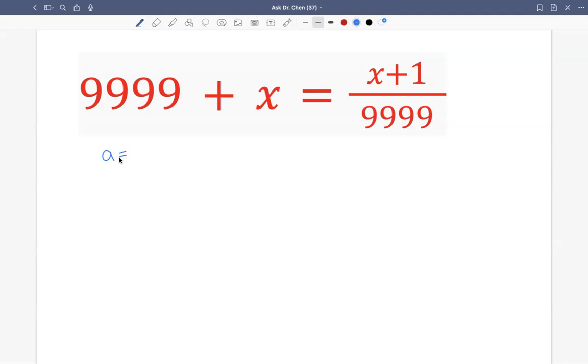So let's just use a variable. You can use any variable, right? Let's say we use a to substitute 9,999. Then the equation can be written as a plus x equals to x plus 1 divided by a.